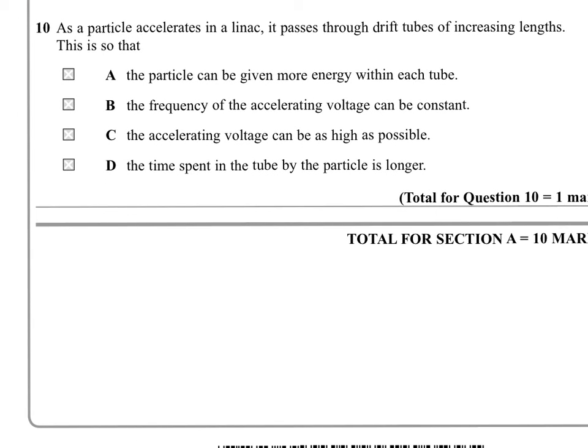Question 10. As a particle accelerates in a linac it passes through drift tubes of increasing lengths. This is so that. So one of these is the reason for the increasing lengths. And the reason we use the increasing lengths is because we want to use a fixed frequency, and so we make them longer to compensate for the fact that in the later stages of the linac the particle is moving faster and we make the tube longer to make it stay in it for the same amount of time so it's really, it's going to be this one with the frequency being constant but let's have a look.